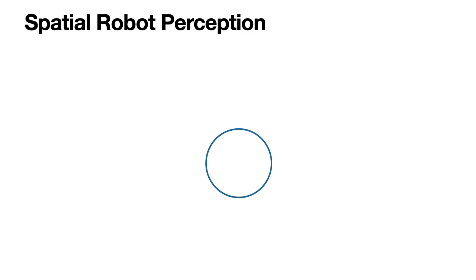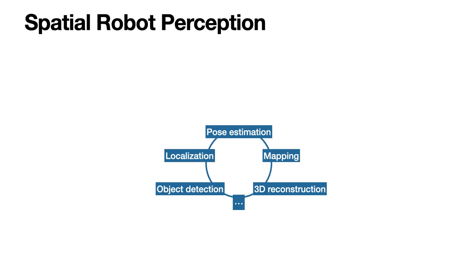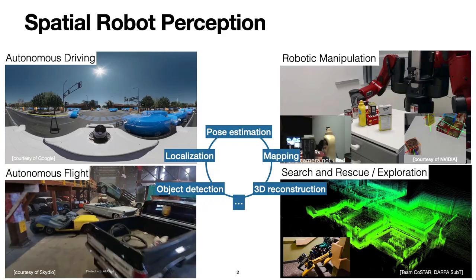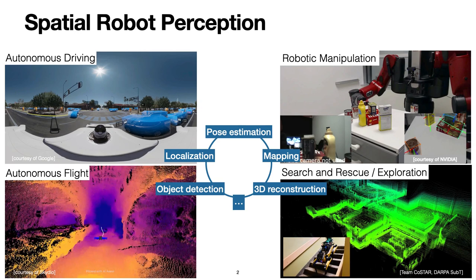Spatial perception is one of the most important topics in robotics and computer vision. Key problems in spatial perception include pose estimation, localization and mapping, object detection, and 3D reconstruction. Spatial perception finds extensive applications in autonomous driving, robotic manipulation, autonomous flight, and robotic search and rescue.